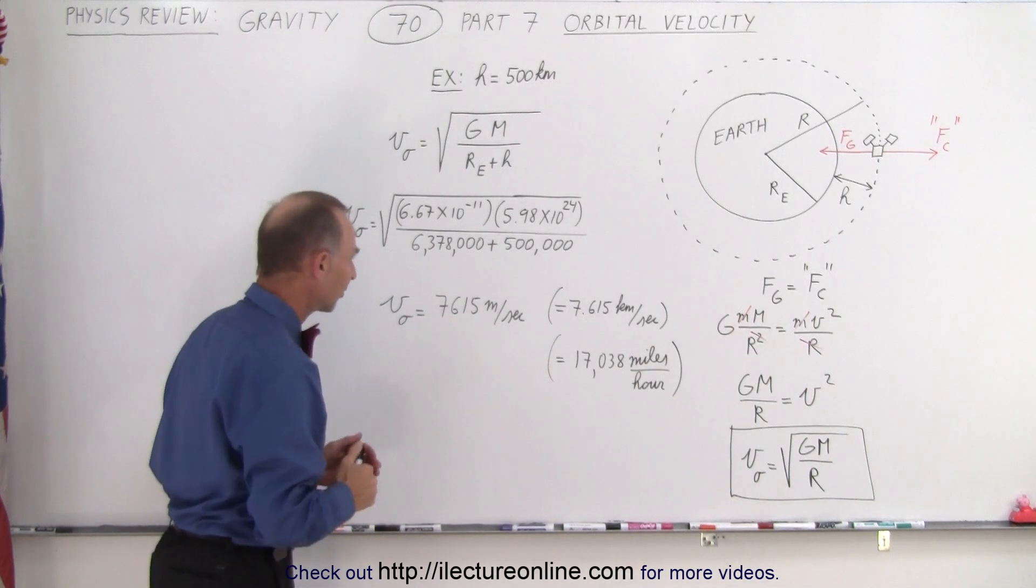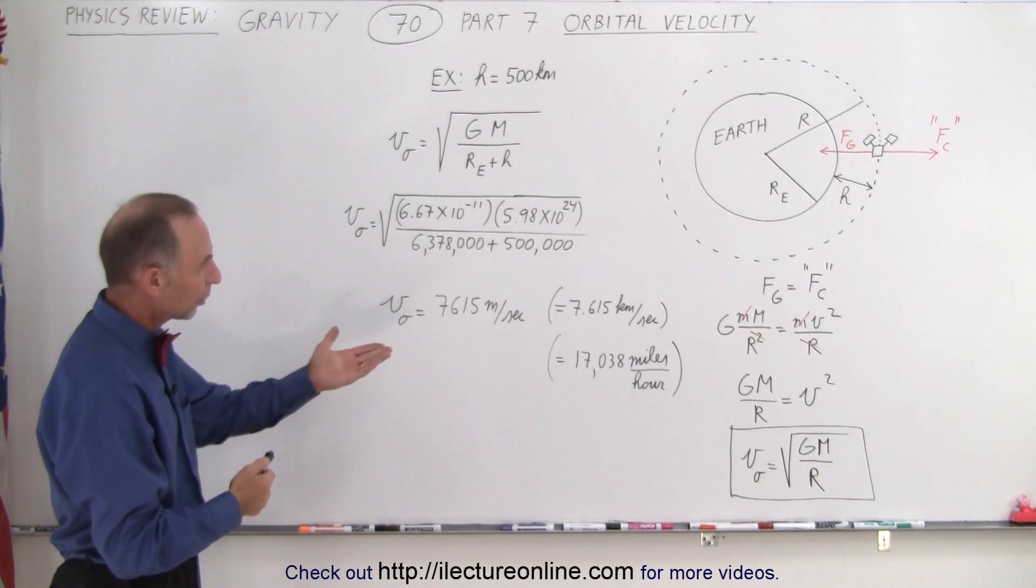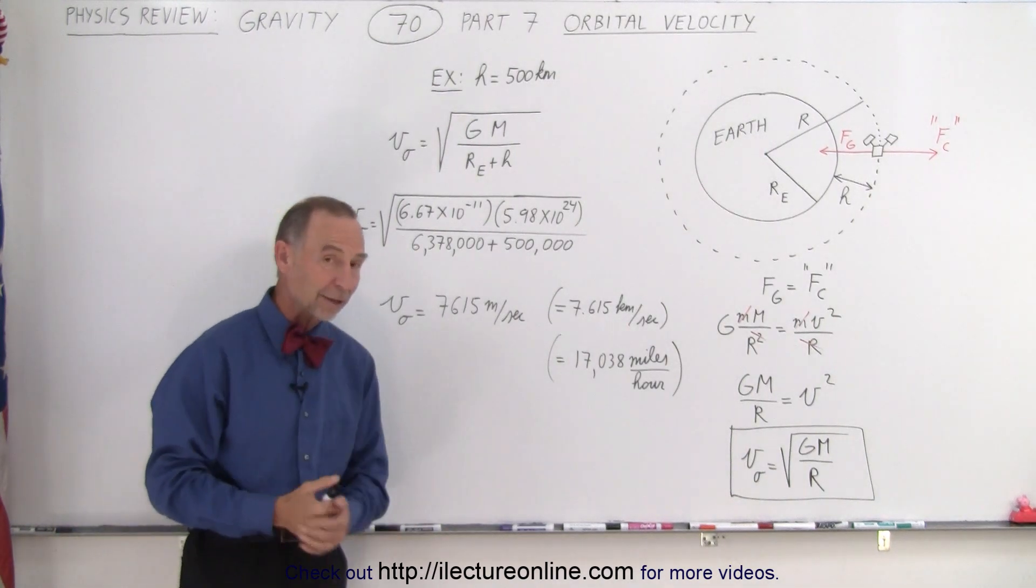The orbital velocity equals 7,615 meters per second, which is about 7.6 kilometers per second, or about 17,000 miles per hour.